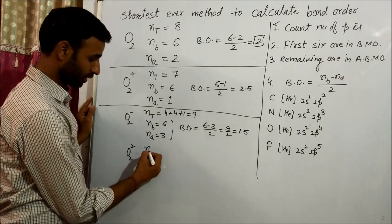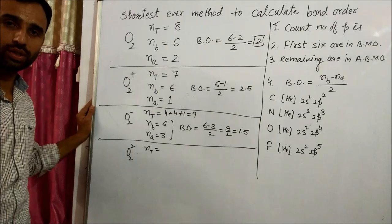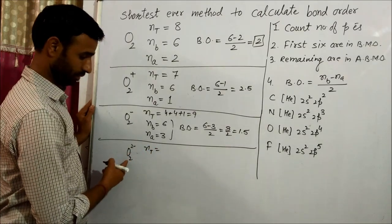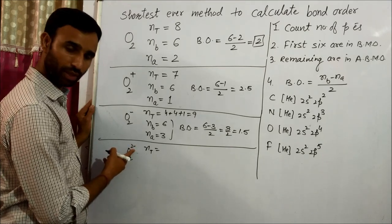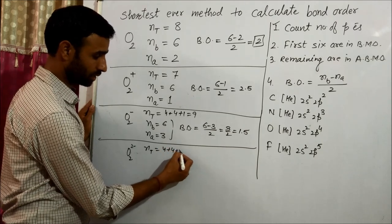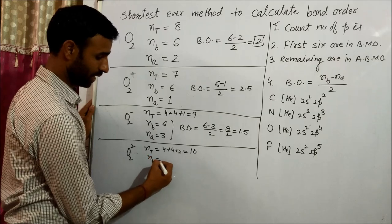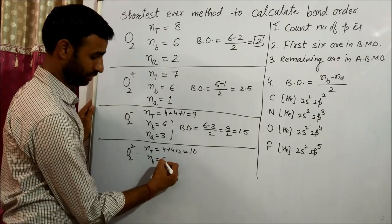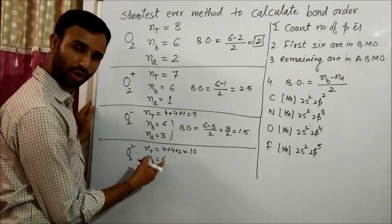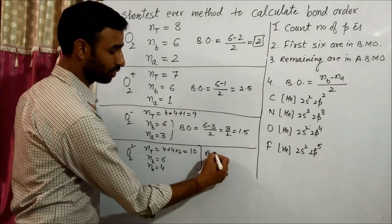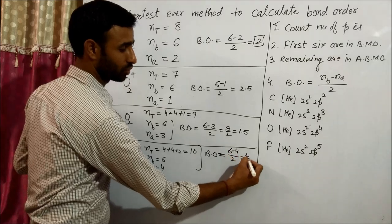O2 two-negative: total electrons are four plus four plus two, which equals ten. Out of ten, six are in bonding and four are in anti-bonding. Bond order equals (6 - 4) / 2 = 1.